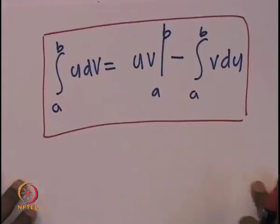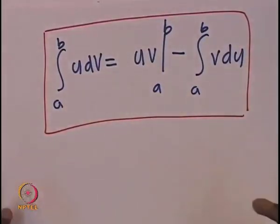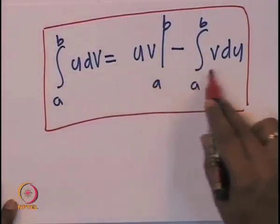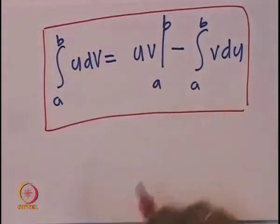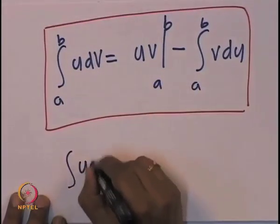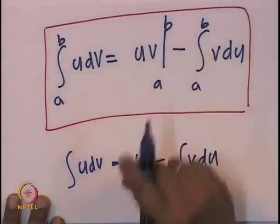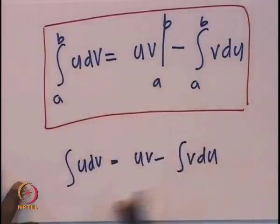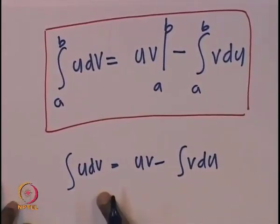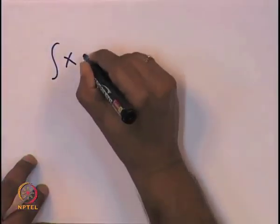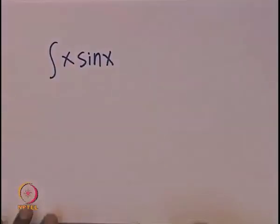So we have an interesting and useful formula: the integral of u dv = uv minus the integral of v du. For an indefinite integral this is ∫u dv = uv - ∫v du. Let us do an example to be clear: the integral from a to b of x·sin(x) dx.